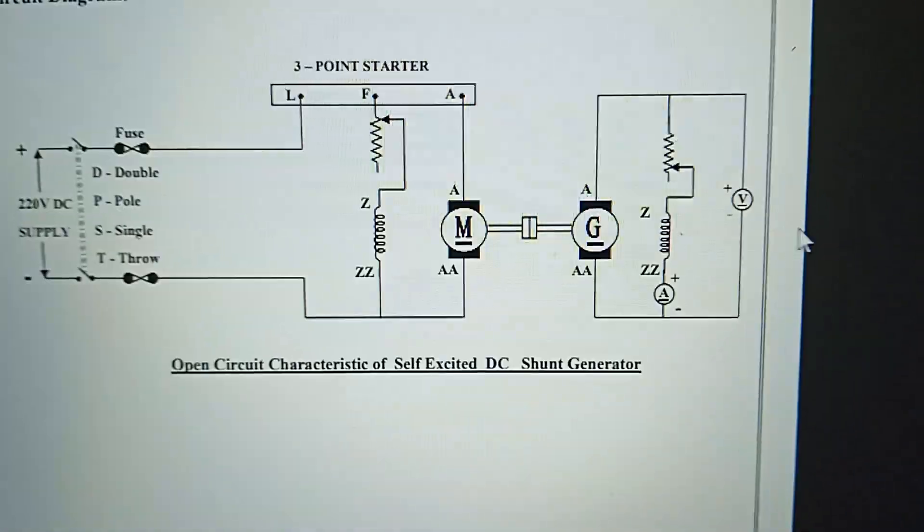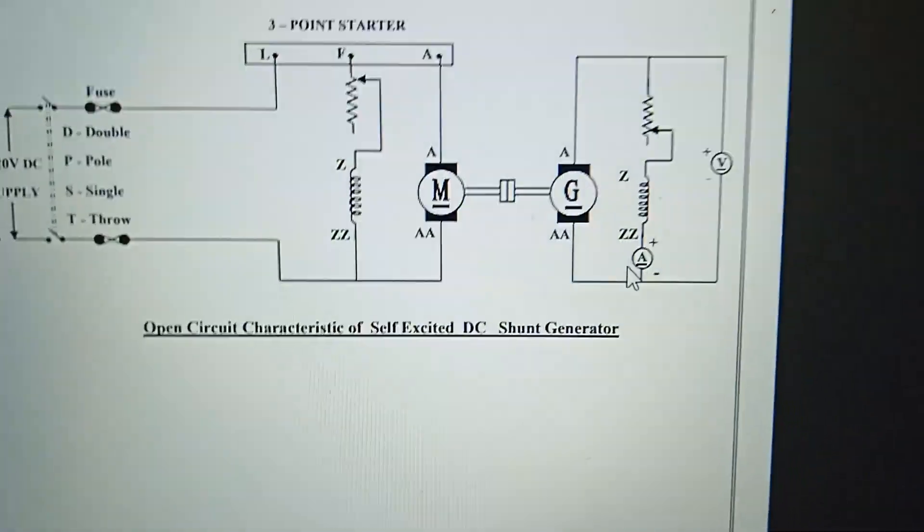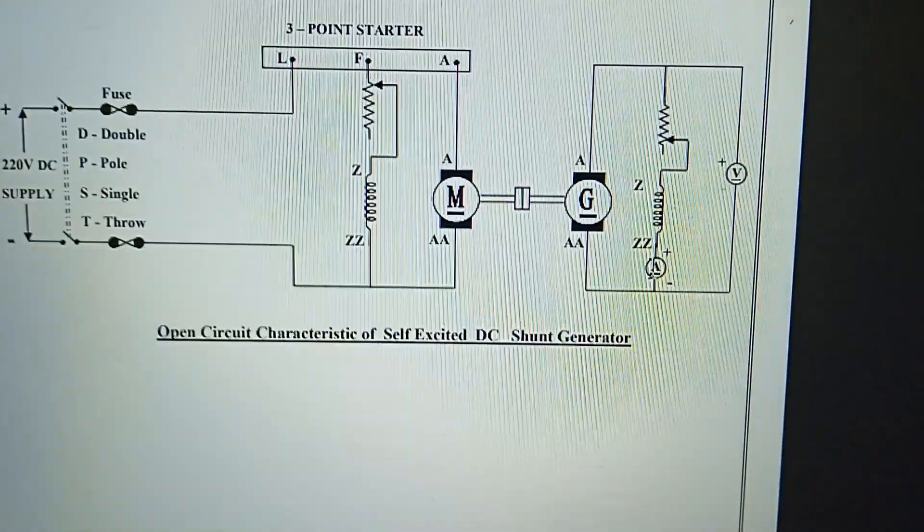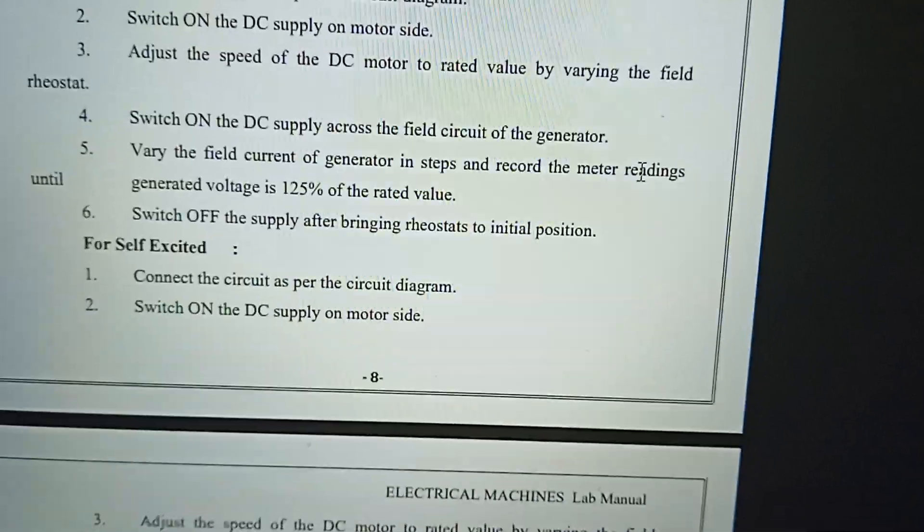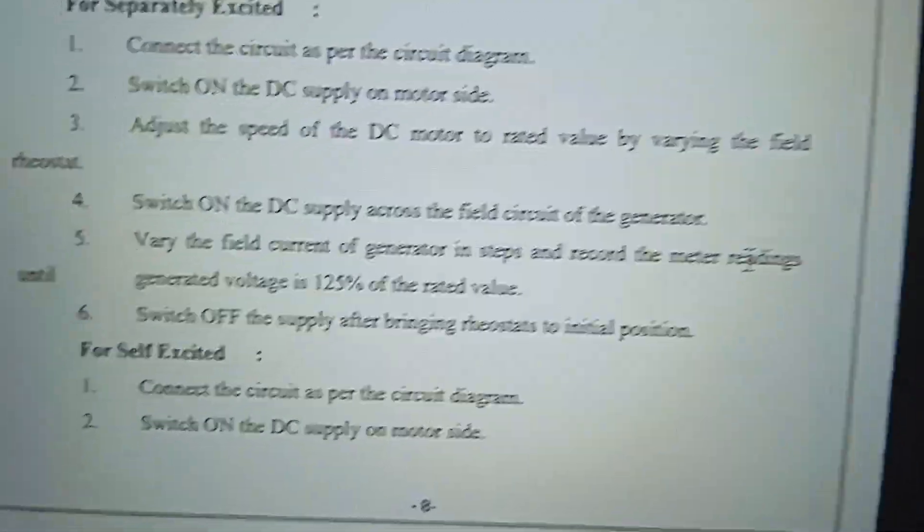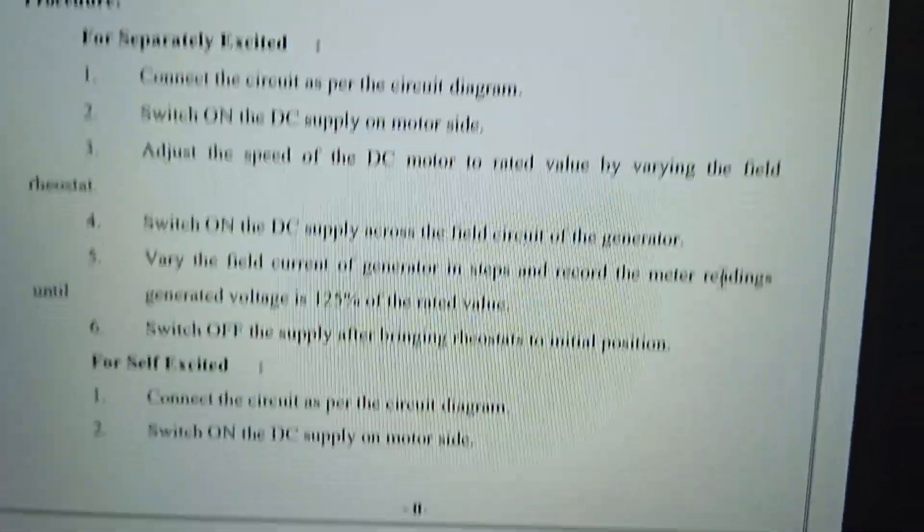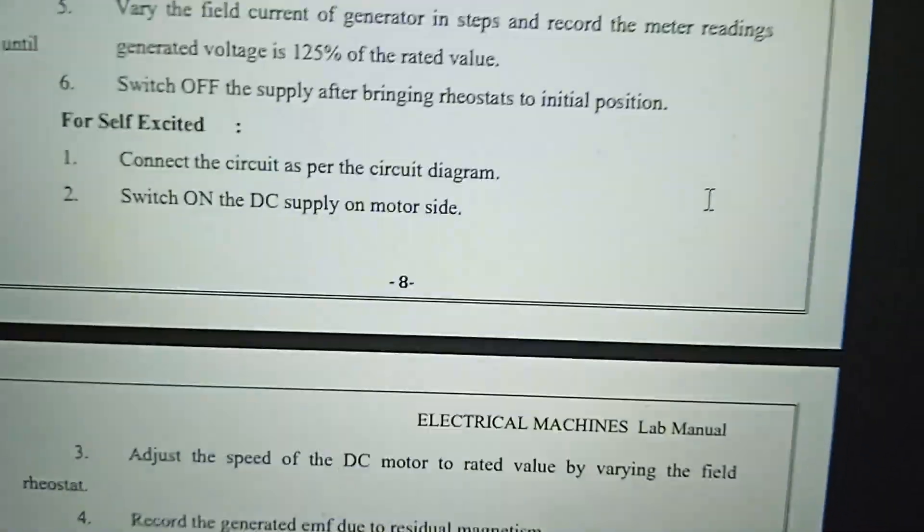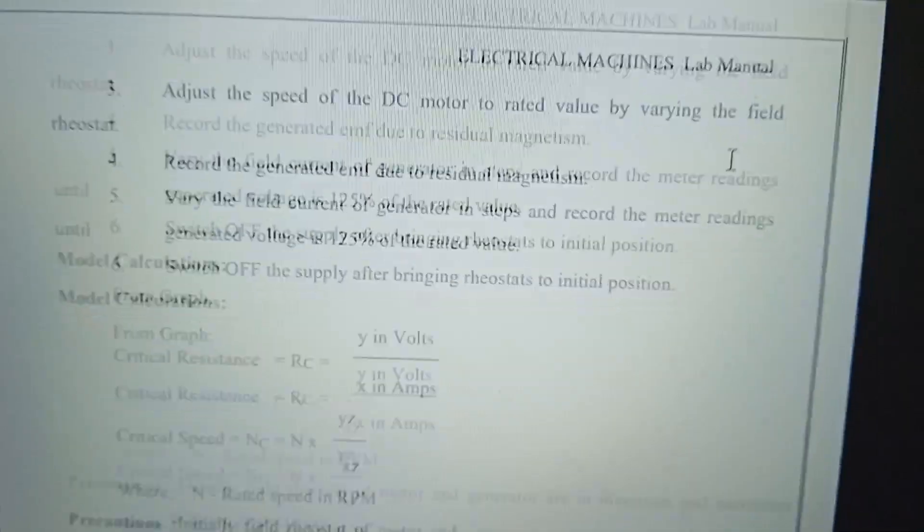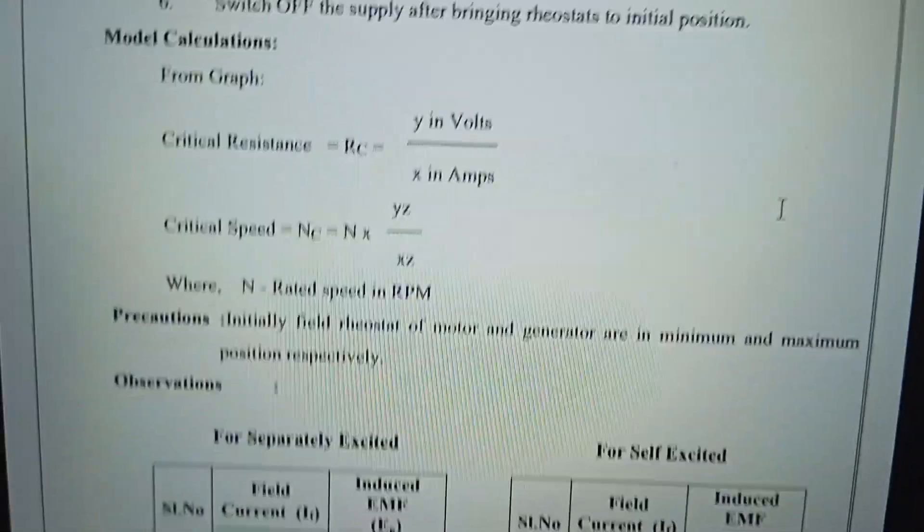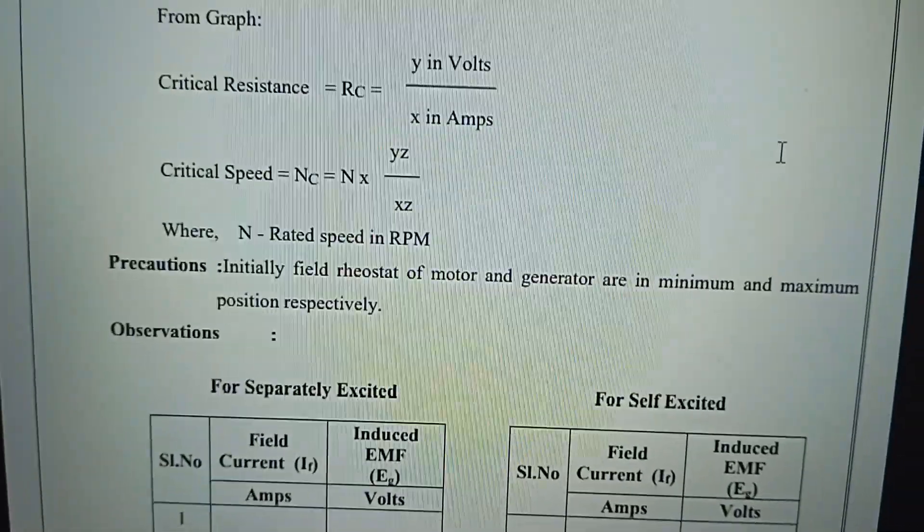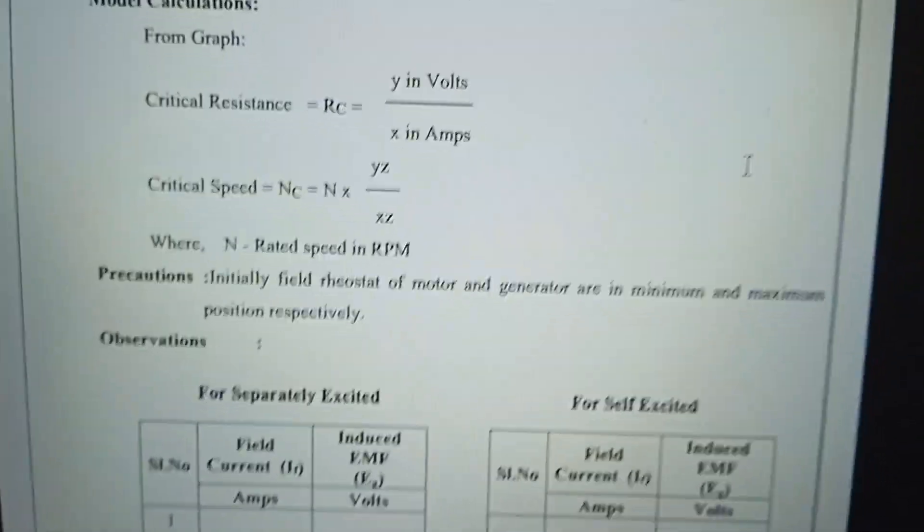Normal voltage values and field current values - 220 volts. We can go up to 125 percent of the rated value, so 1.25 times 220 volts is allowed. Critical resistance RC is Y by X. Critical speed NC is YZ by XZ.